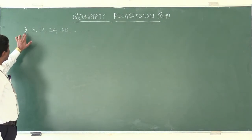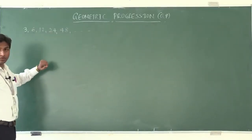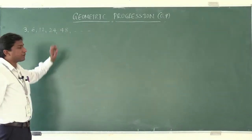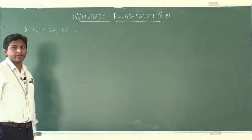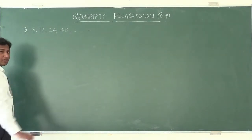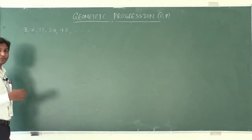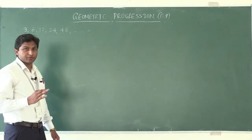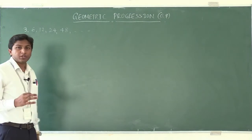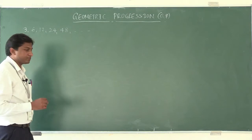The first term of this sequence is 3, second term is 6, third term is 12, fourth term is 24, fifth term is 48, and so on. Now under AP we performed the difference between consecutive terms, whereas here we shall perform the ratio between consecutive terms.